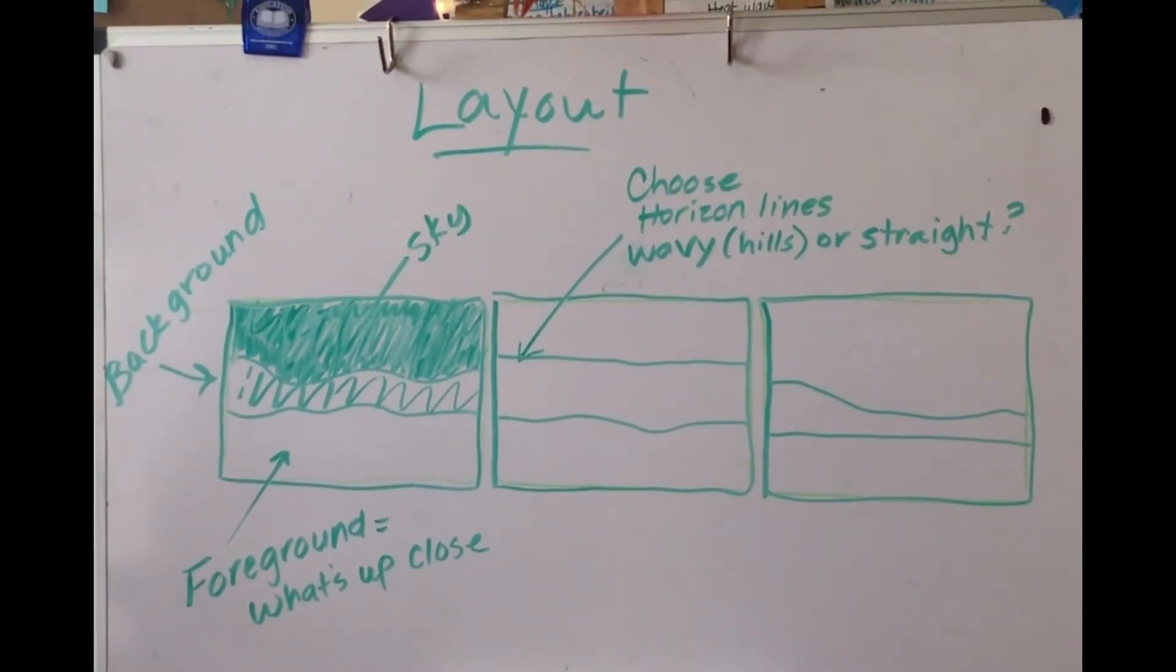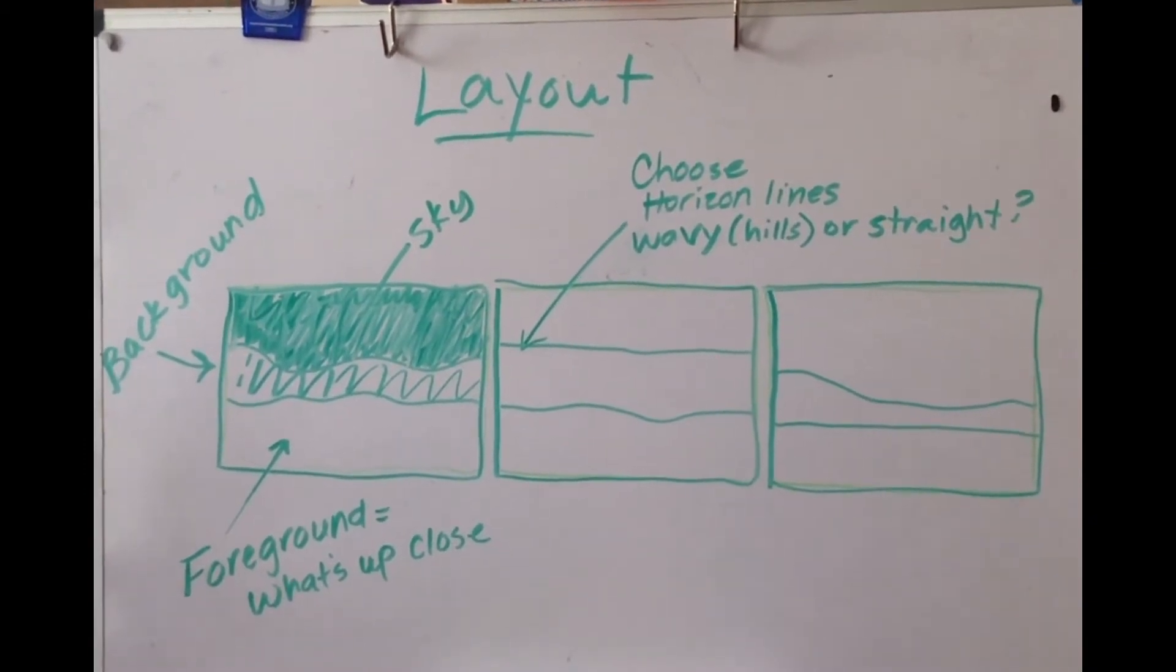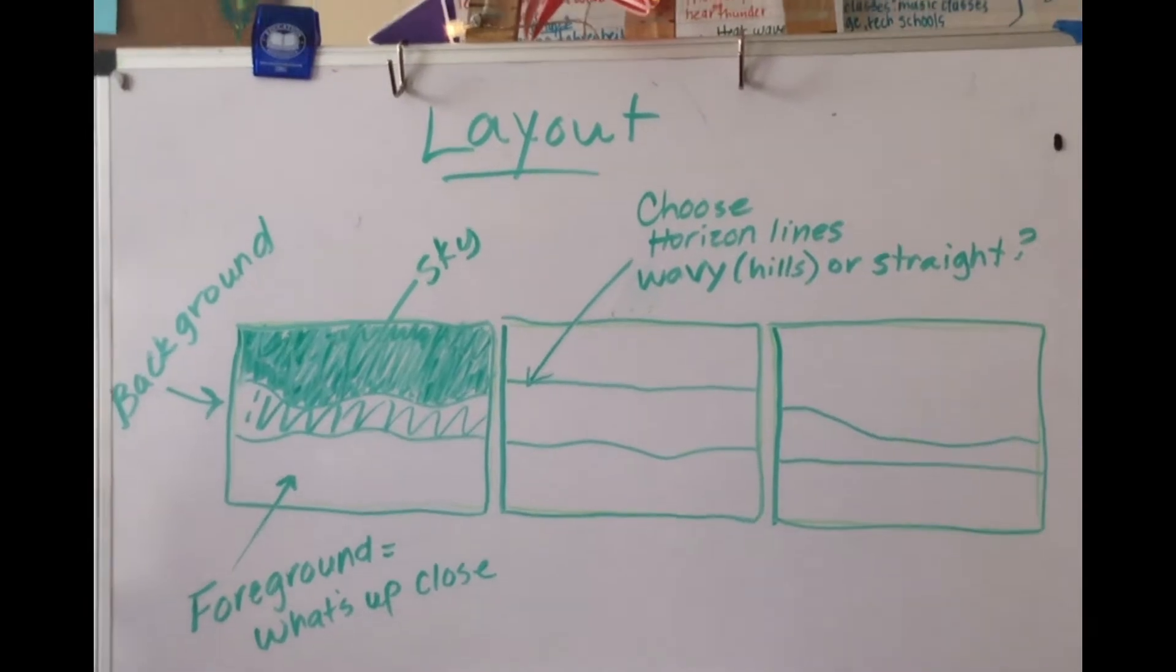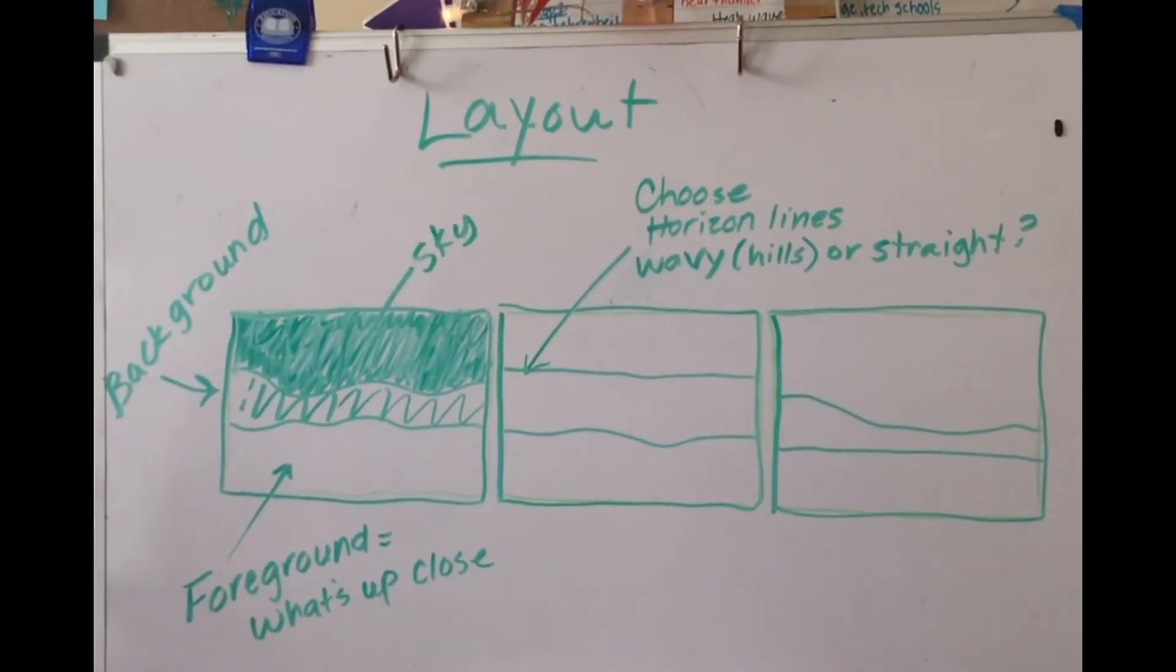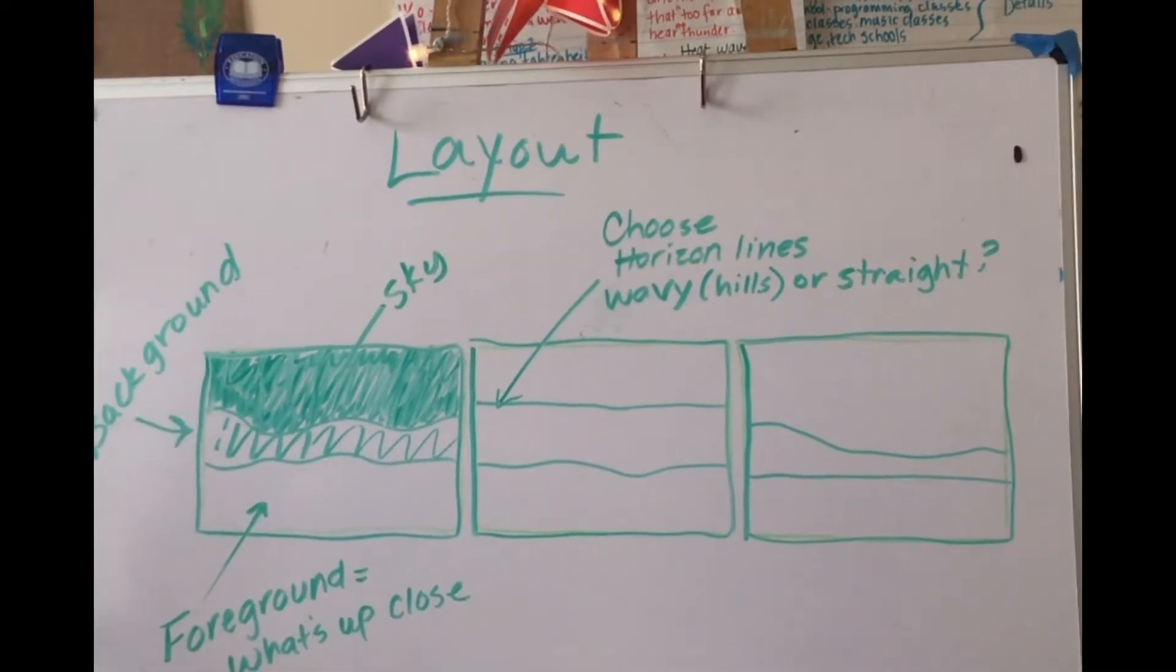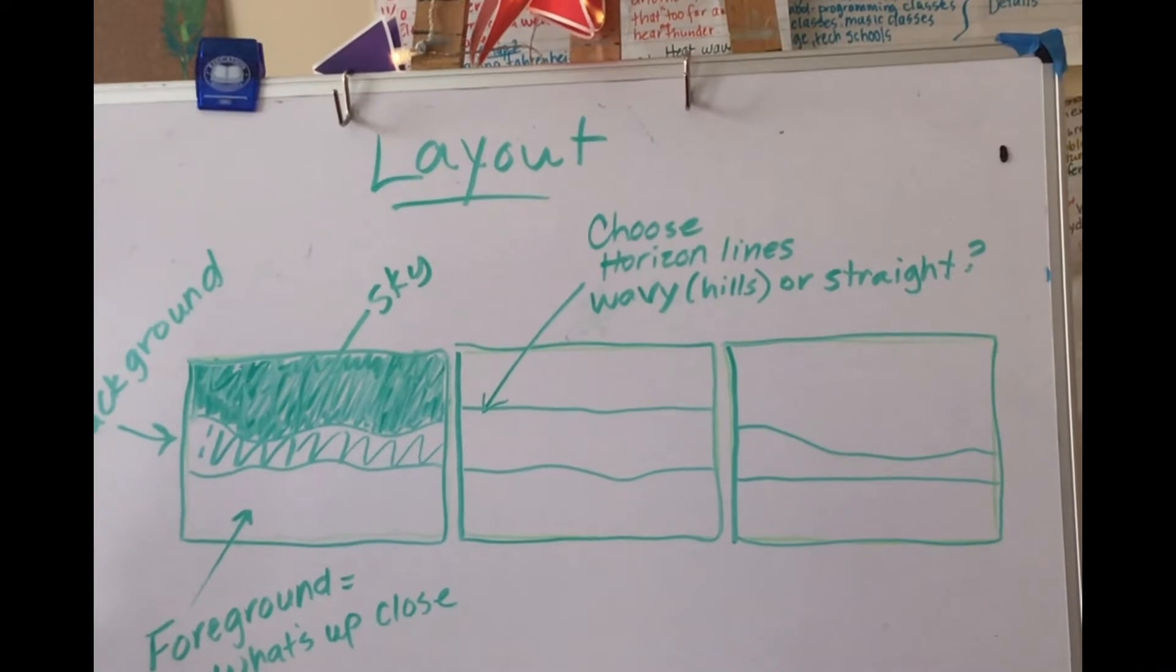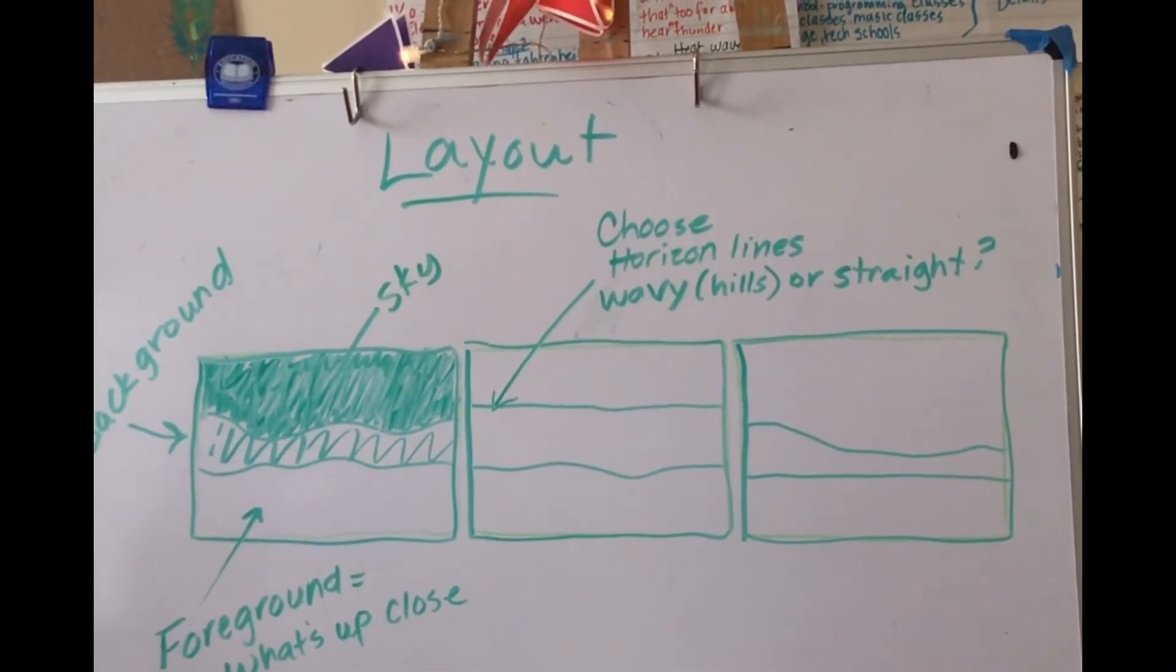So you can see I have on the left side an example of what it might look like if it was painted in. And then the next step is to choose your horizon lines. Do you want them to be wavy to make hills or do you want them to be fairly straight? On the example on the far right side I have a combination of both.